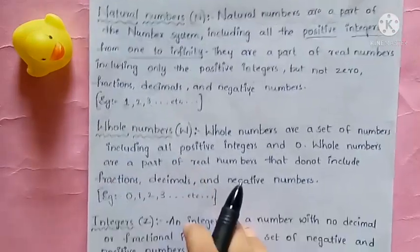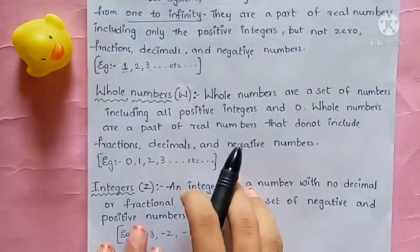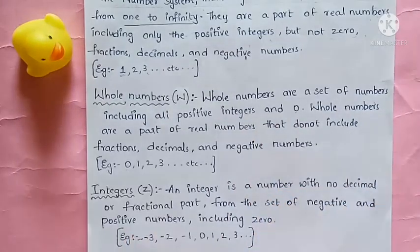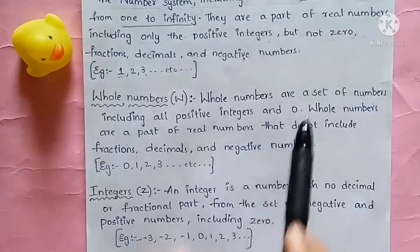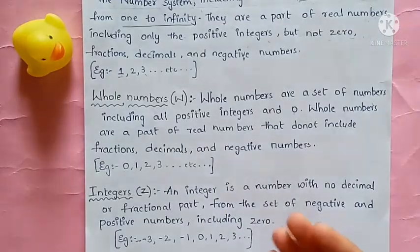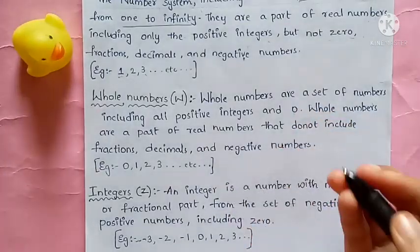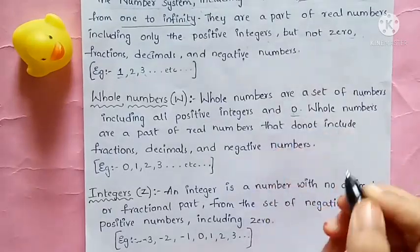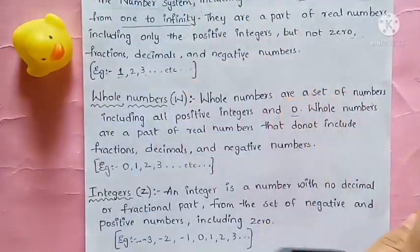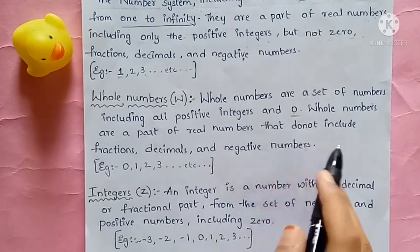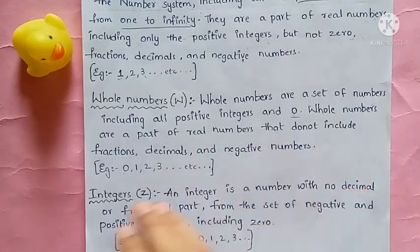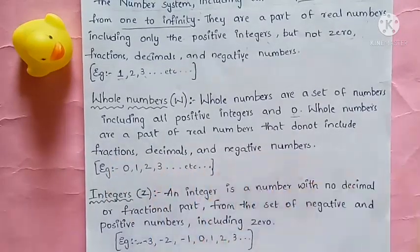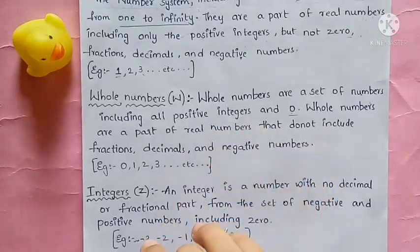Coming to whole numbers. Whole numbers are a set of numbers including all positive integers and 0. Whole numbers are the same as natural numbers except they also include 0. They are part of real numbers that do not include fractions, decimals, and negative numbers.